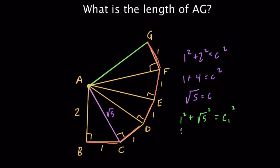All right, so 1 squared is 1, right? The square root of 5 squared, what is that? Well, that's just 5, right? Because if you square a square root, that cancels out. Those are inverse operations. And now c sub 1 squared is equal to what? Well, it's equal to 6. So c sub 1 is just equal to the square root of 6. So our next hypotenuse is the square root of 6. So first we had the square root of 5. Now we have the square root of 6.